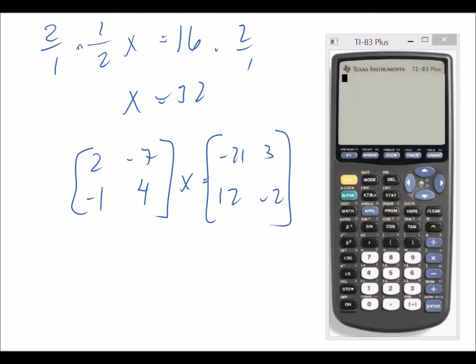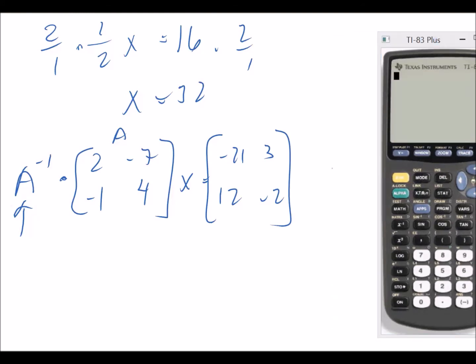So how would you solve for x? Well, if this is matrix A, you'd multiply by the inverse of matrix A, and that inverse is found using your calculator. So A times inverse of A, and of course, on the other side, you'd multiply by the inverse of A as well, because you do the same thing to both sides.